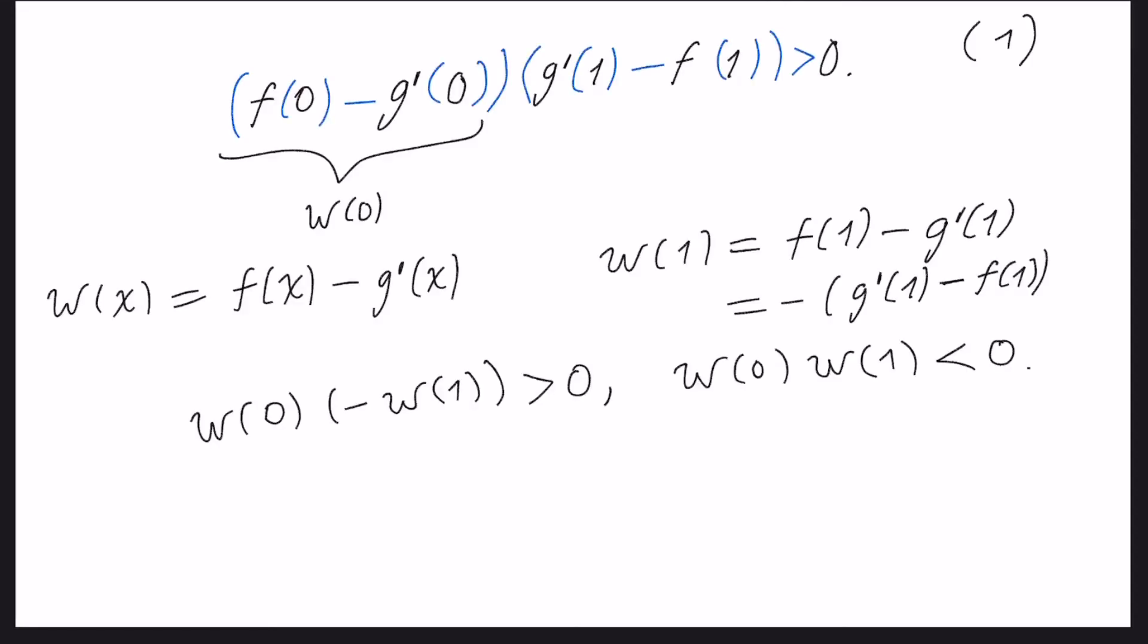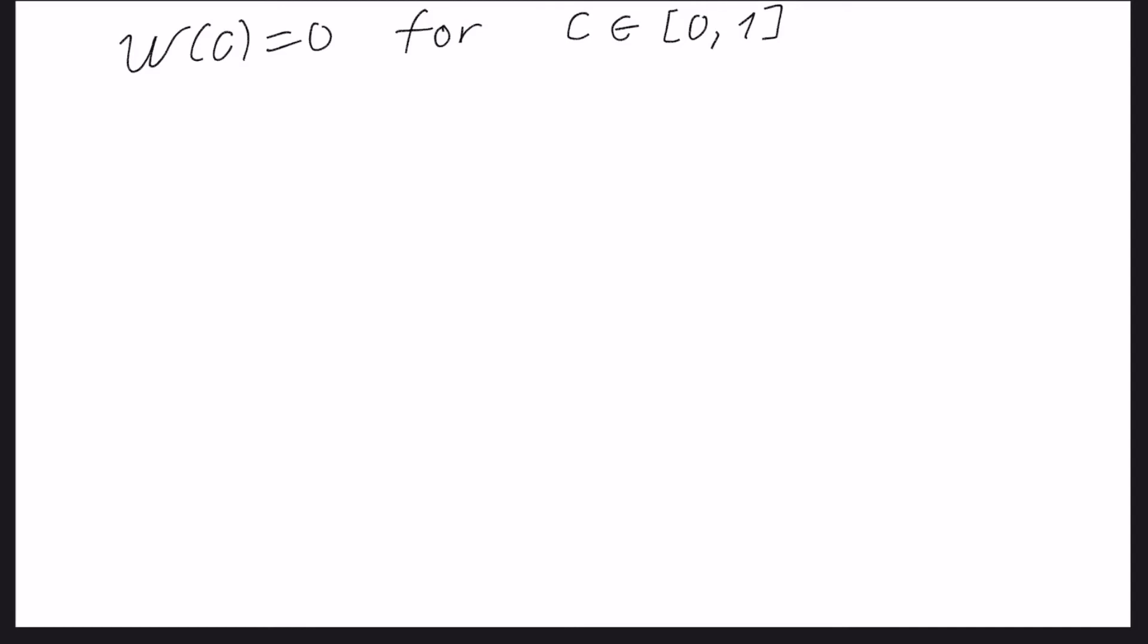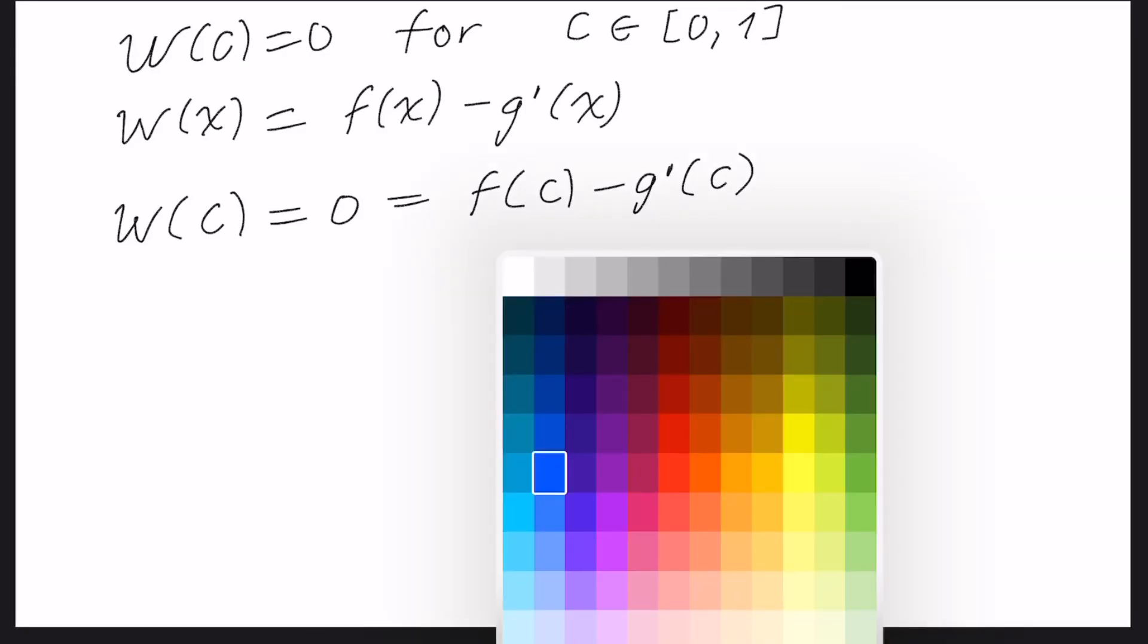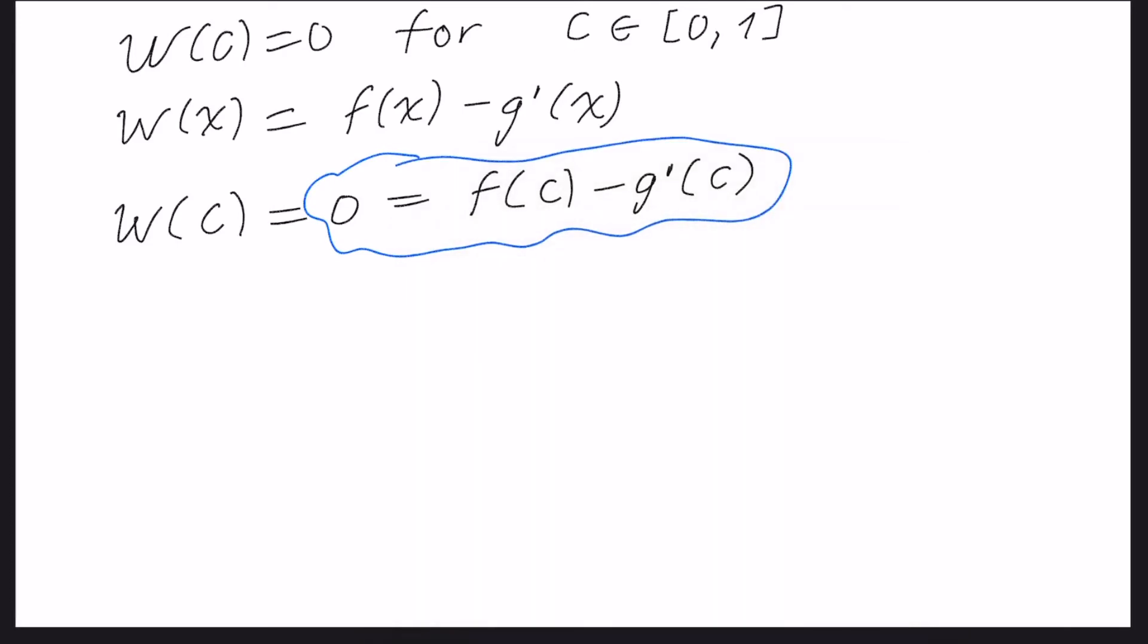Remember that w(x) is f(x) minus g derivative in x. So we will have that w(c) equal to 0. And this is the same that f(c) minus the derivative of g evaluated in c. Let's take this last part, that is the most important part. And then we will deduce that the derivative of g in c must be equal to f(c) for a c, or at least one, for a value of c in the interval, the closed interval from 0 to 1.